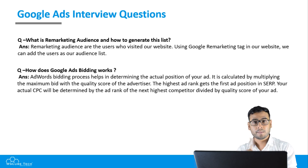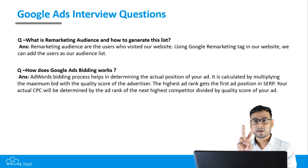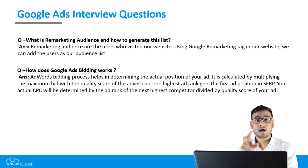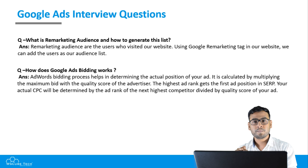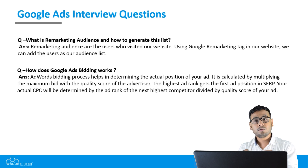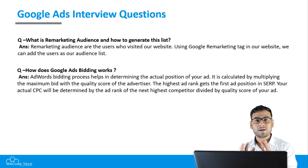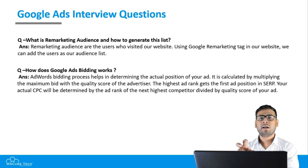Let's take another example. If a competitor bids 6 rupees with a quality score of 5, their score is 30. A third advertiser bids more than 6 rupees but has a quality score of 4, giving them 24. Since 30 is greater than 24, the advertiser with 30 gets the better rank. So the second advertiser with bid of 5 rupees and quality score of 6 can outrank the one with bid of 6 but quality score of 4. This is how the bidding working process works.